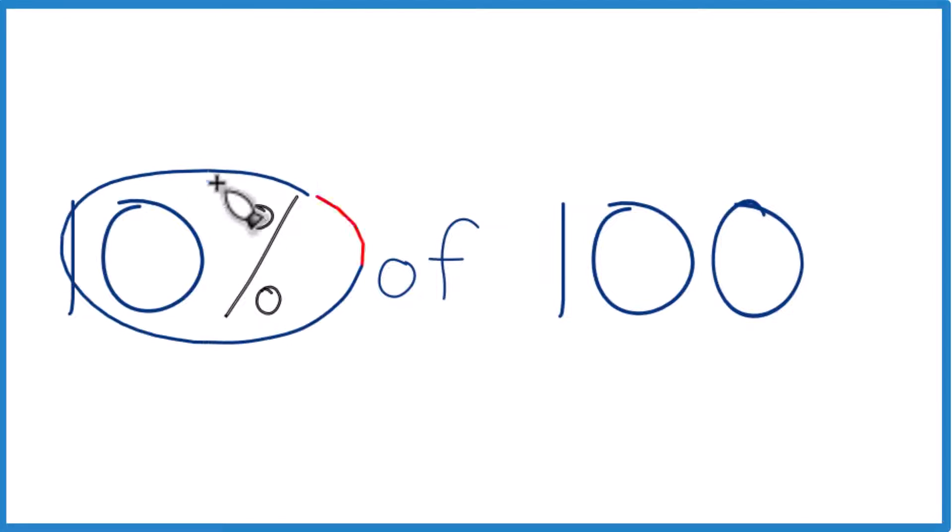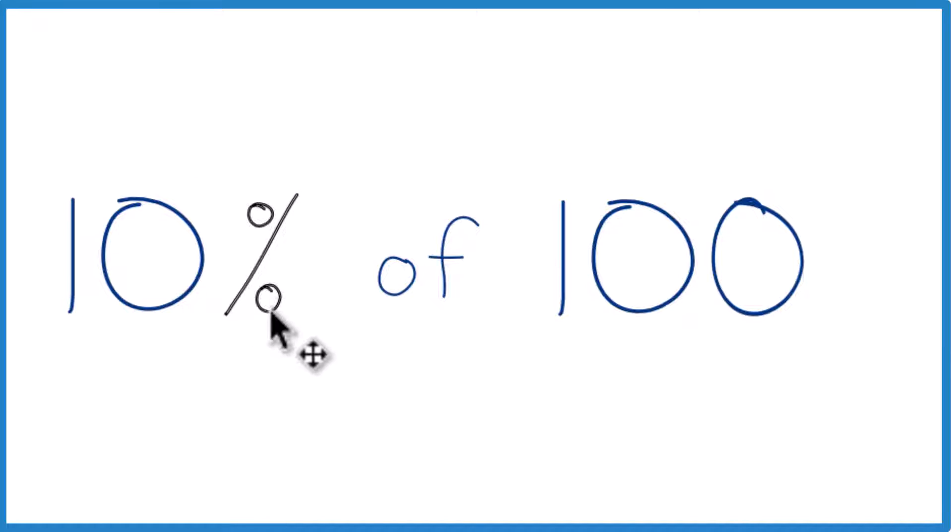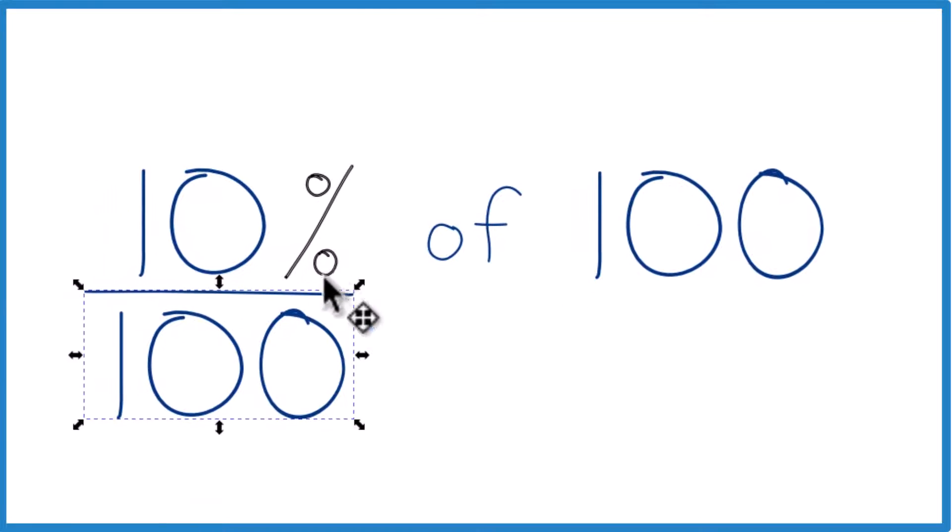If you need to find 10% of 100, here's how you can do it. So percent means per 100. So really what we're talking about is 10 out of 100 or 10 over 100.